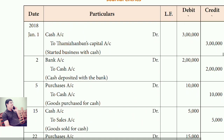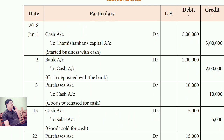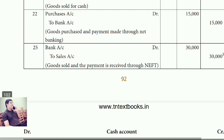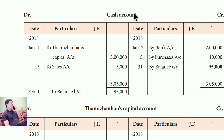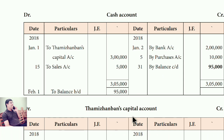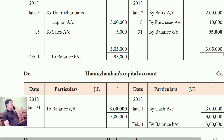See the first journal entry: Cash account debit, to capital account. In the ledger, 'To' means debit side and 'By' means credit side. So in cash account on the debit side, write 'To capital account'. In the capital account, write 'By cash account' on the opposite (credit) side.